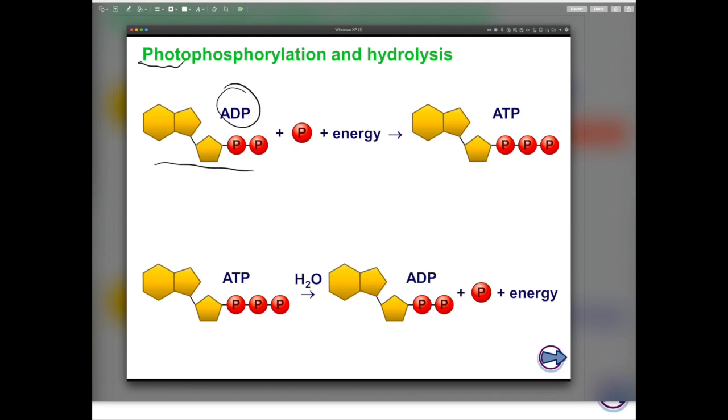ADP is the form of ATP that has less energy. Using light energy, a phosphate group is attached to ADP here to form the higher energy molecule, ATP. Since we are forming new bonds in this reaction, then this reaction is also known as a condensation reaction.